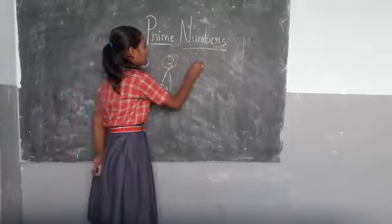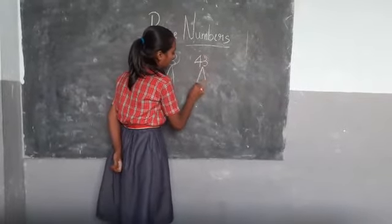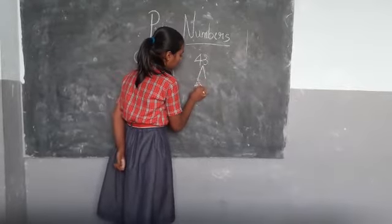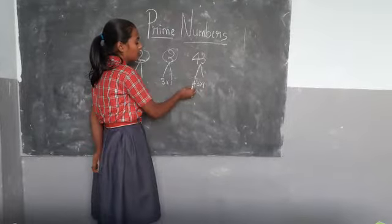Again I am taking forty-three. Forty-three ones are forty-three. Here forty-three will come in only forty-three table. So it is a prime number.